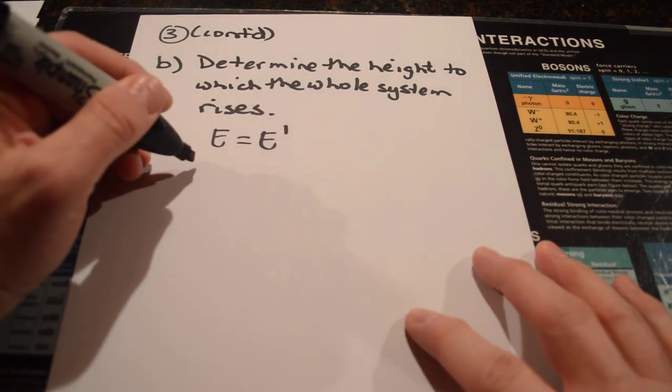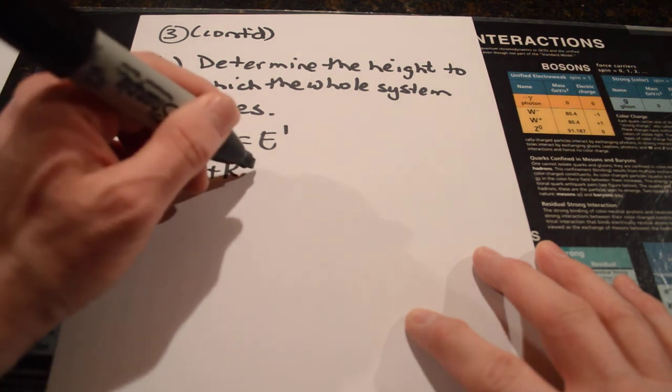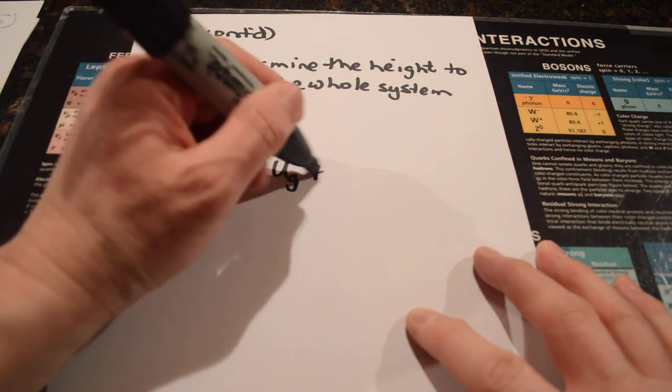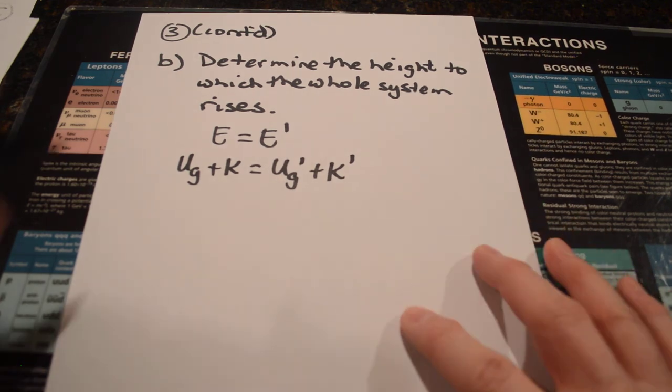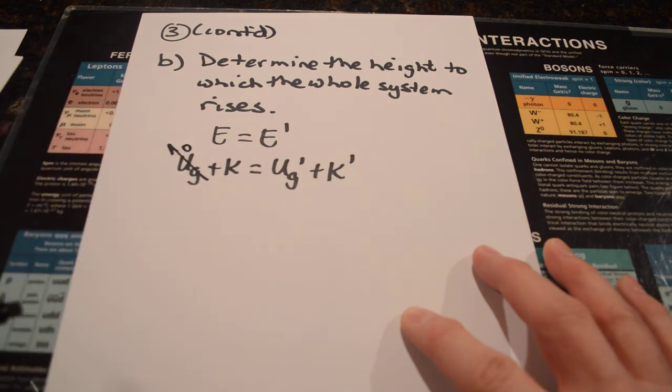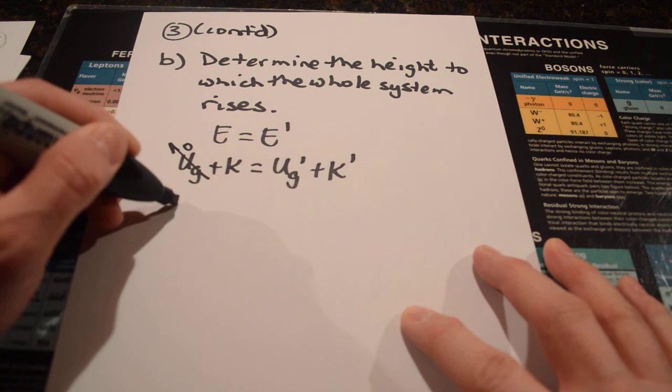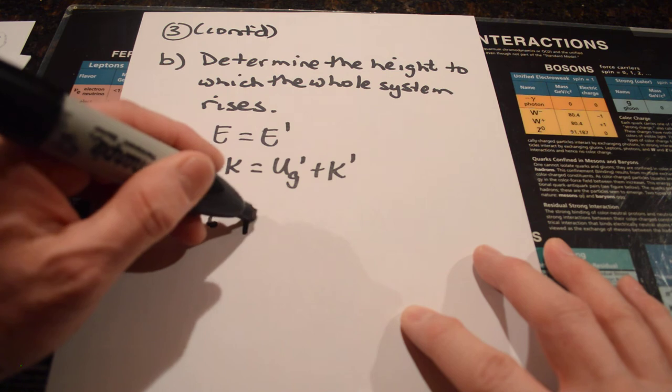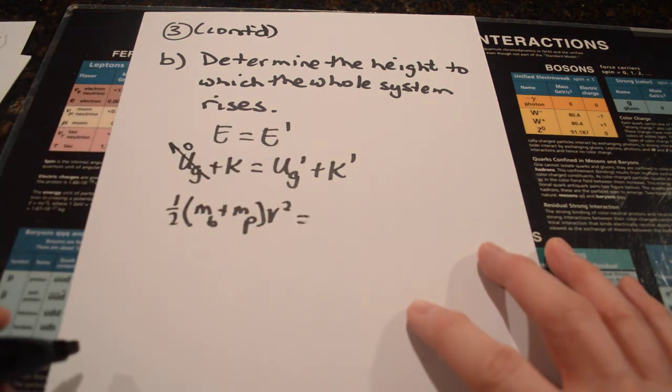Okay? So, in this case, the potential at the bottom plus the kinetic at the bottom is going to equal the potential energy at the top plus any kinetic energy at the top. Well, at the bottom, I think it would be wise to say that's what we're going to call the zero point of potential energy. So, it just has kinetic energy, which would be one-half the mass of the ball plus the mass of the pendulum times v squared.